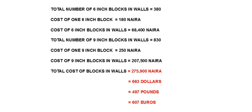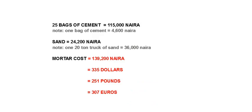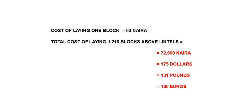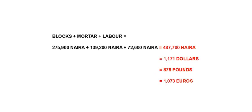Next we'll cover the cost of the walls above the lintels. Blocks will cost 275,900 Naira, approximately 663 dollars, 497 pounds or 607 euros. Mortar will cost 139,900 Naira, approximately 335 dollars, 251 pounds or 307 euros. The cost of laying blocks is 72,600 Naira, approximately 175 dollars, 131 pounds or 160 euros. The total cost of the walls above the lintels is 487,700 Naira, approximately 1,171 dollars, 878 pounds or 1,073 euros.